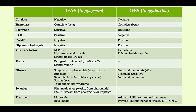Now let's get into the differences. The most important thing when you've got beta hemolytic strep is to do a bacitracin sensitivity test. The mnemonic is BRAS: B for bacitracin, BR for group B resistant, AS for group A sensitive.